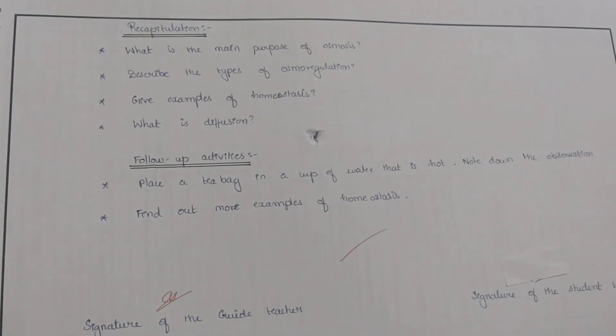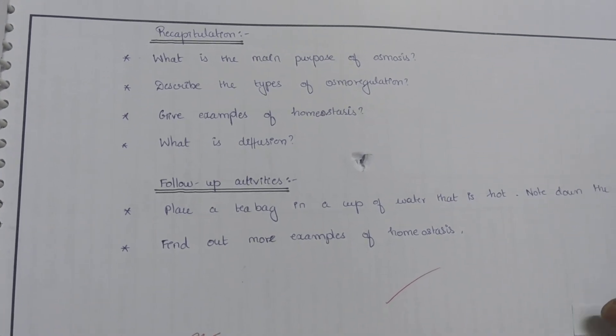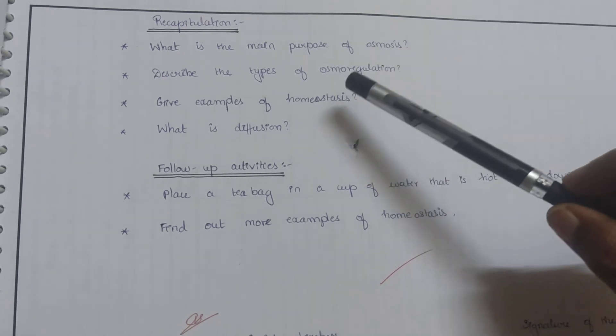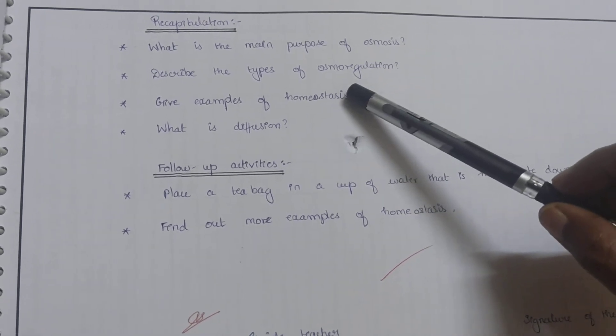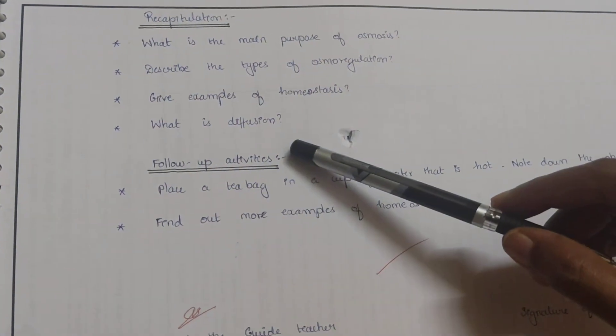Now we move on to the recapitulation part. What is the main purpose of osmosis? Describe the types of osmoregulation. Give examples of homeostasis. What is diffusion?